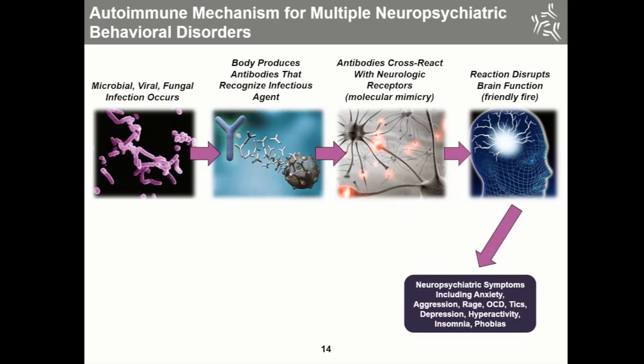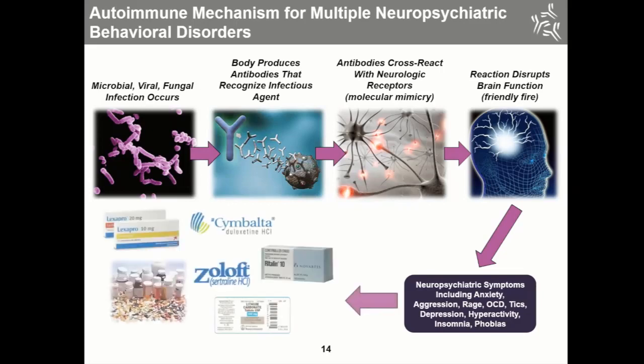Often, patients become placed on a regimen of anti-anxiety, anti-psychotic, anti-depressant, and many other medications. But in patients who have these infection-triggered autoimmune conditions, the underlying etiology — the underlying root — is really the infection and the immune system.